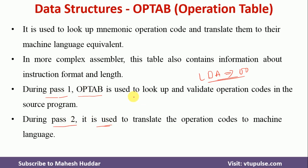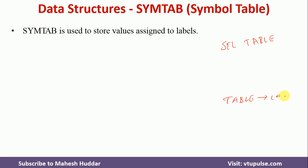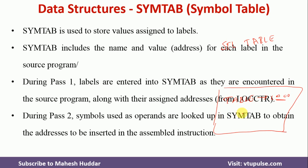SYMTAB (symbol table) is used to store the values assigned to symbolic operands or labels. For example, an instruction like STL TABLE means store the accumulator value into TABLE. TABLE is a label, so we need an address for it. We create a SYMTAB entry — for example, TABLE maps to address 1000 — meaning the label TABLE is located at address 1000. This table is created in pass one and used in pass two.